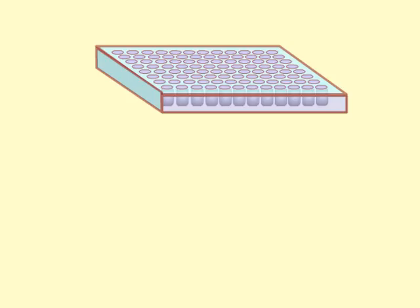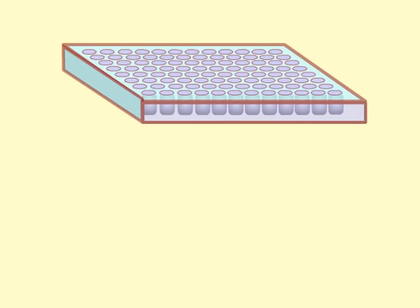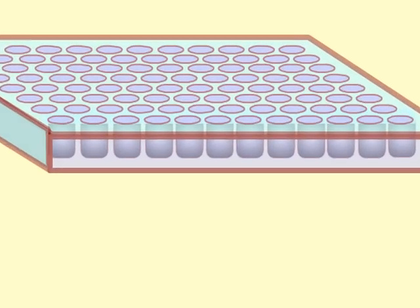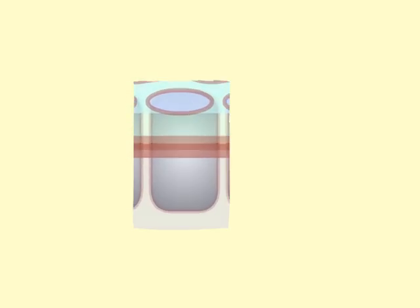The enzyme immunoassay can be done in a multi-well microtiter plate or on any other solid adherent surface. I will use the microtiter plate in this example, so let's take a closer look at one of the wells of this plate to see what happens during the performance of the assay.